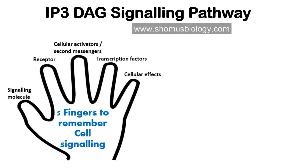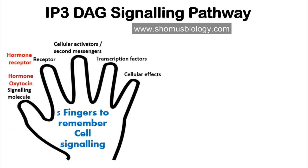As per our five finger concept, we start with the signaling molecule. In the IP3/DAG signaling pathway, the first signaling molecule is a hormone — just like other GPCR pathways, the IP3/DAG pathway is also a hormone signaling pathway. An example of this hormone is oxytocin. The second parameter is the receptor: in this case, the oxytocin receptor.